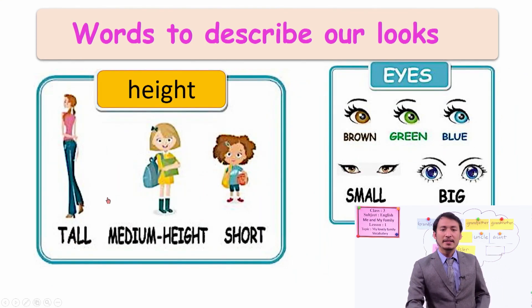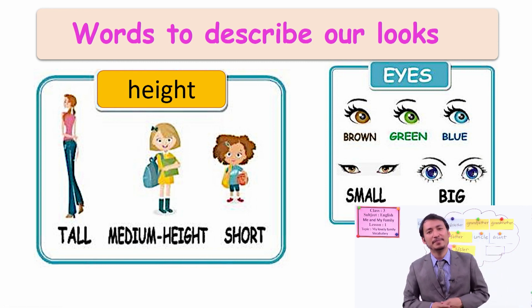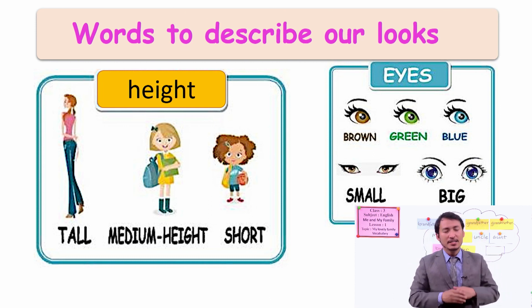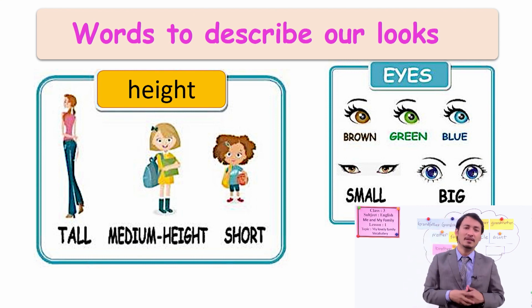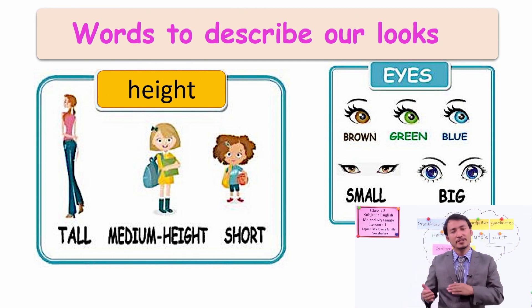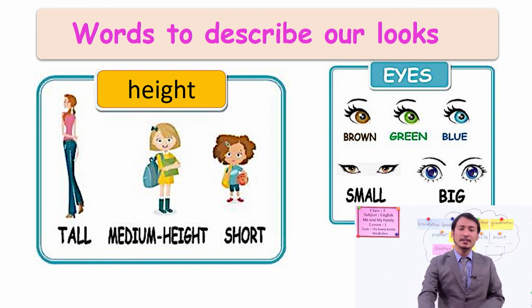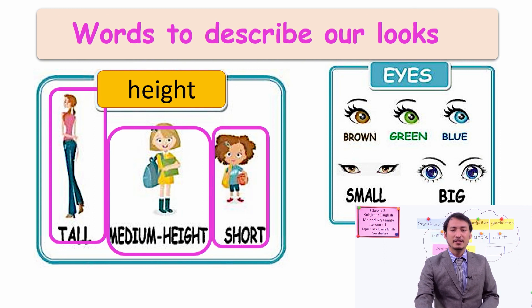Now let's look at another side you can describe — the height of the people. Height means how tall are the people. Some people are short, some people are medium height, and some are tall. So you can say, if someone is tall — my friend is tall, my family is tall — and you can say, 'I have a friend who is very short.' Tall, medium height, short.